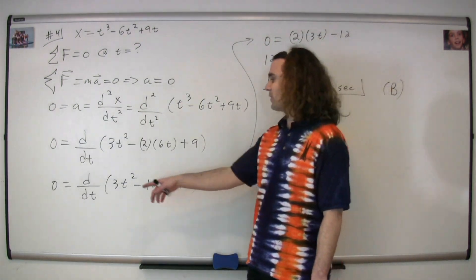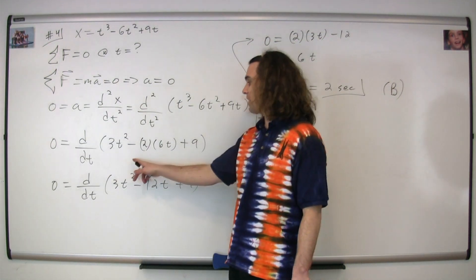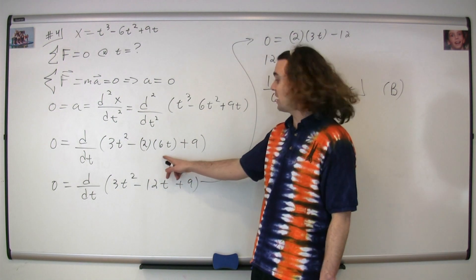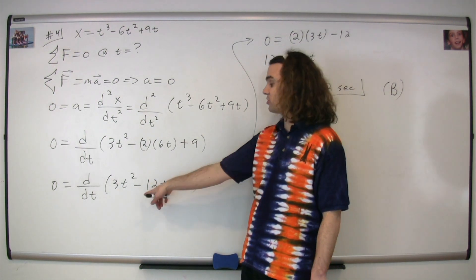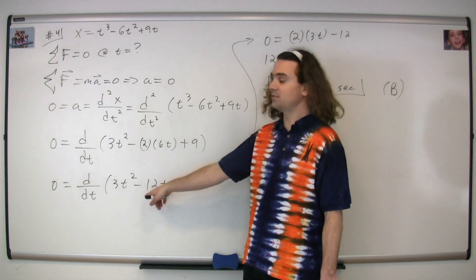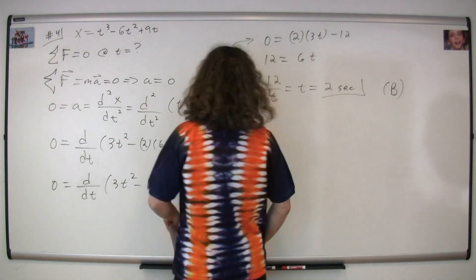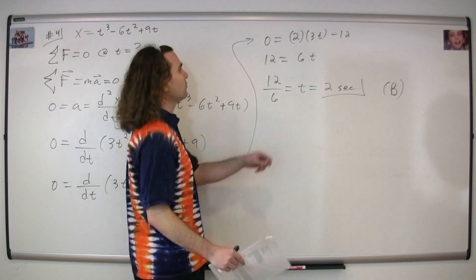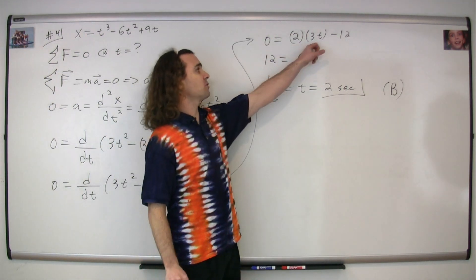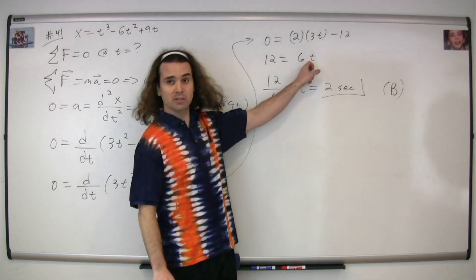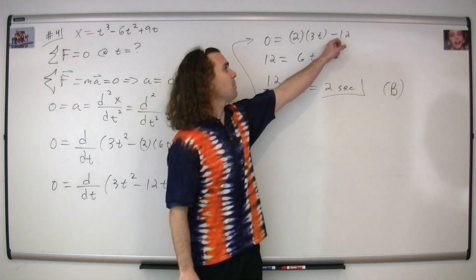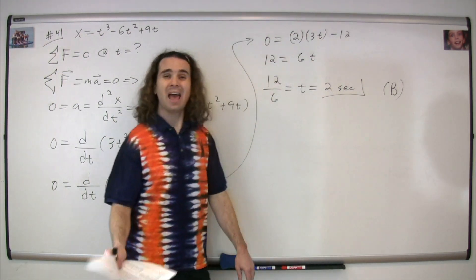Taking the first derivative, we get 3t² minus two times 6t, which works out to be 12t, plus 9. Taking the derivative again, we get two times 3t, which works out to be 6t, minus 12.